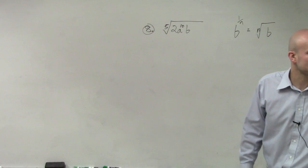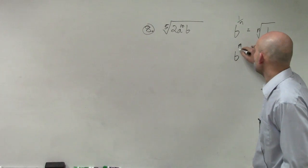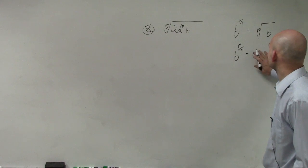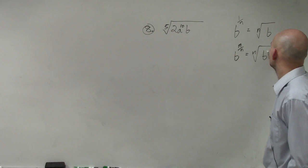Sometimes we're going to have b to the first power. The next one is if I have b to the m over n, that's equal to the nth root of b to the m power.